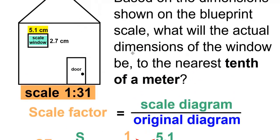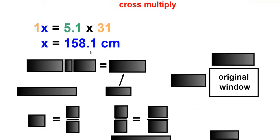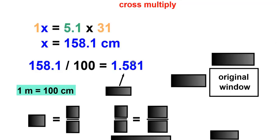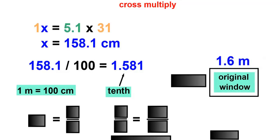The question wanted the actual dimensions of the window to the nearest tenth of a meter. Our answer is in centimeters, so we'll have to convert centimeters to meters. 1 meter is equal to 100 centimeters, so we'll take the 158.1 centimeters, divide it by 100, and that gives us 1.581 meters. Rounded to the nearest tenth — where the 5 is — that will be 1.6 meters. And that will be the top of the original window.